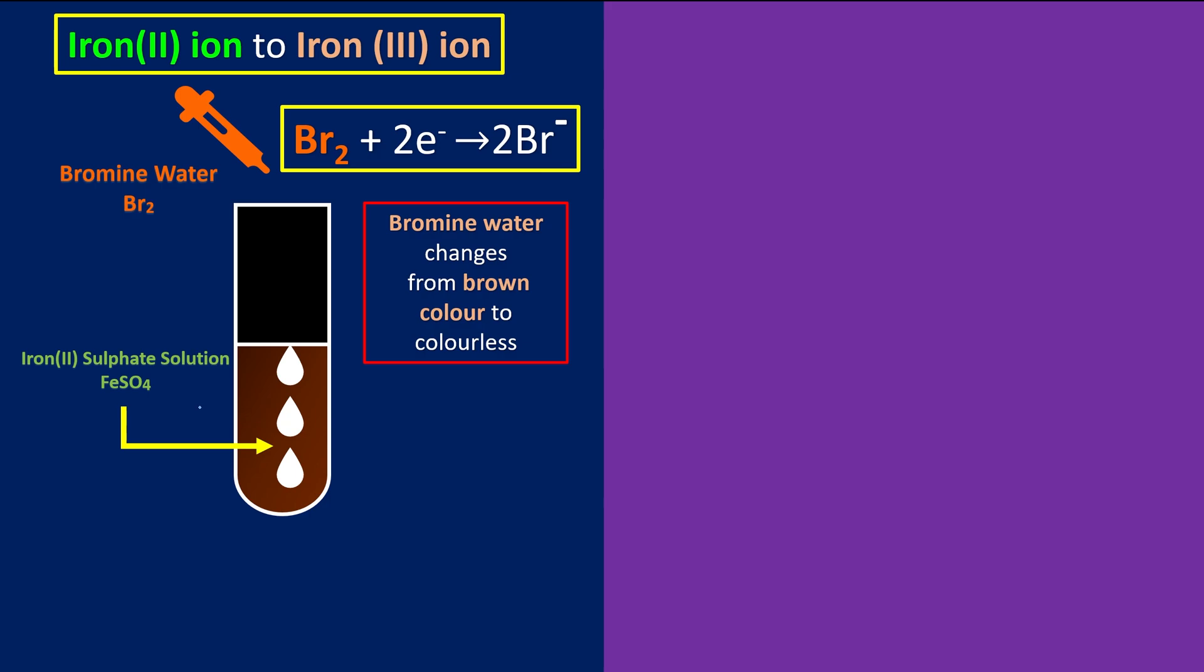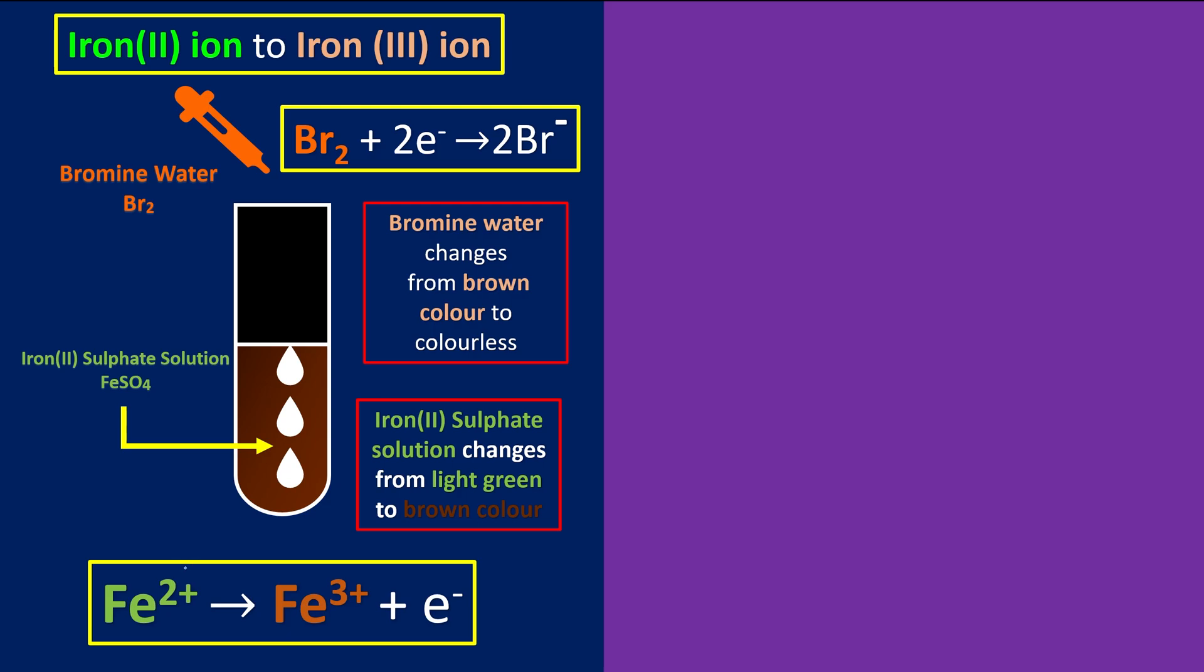Meanwhile, we also observe that the iron(II) sulfate solution, in the beginning light green in color, turns to brown color. Because we know iron(II) has been oxidized to become iron(III) ions. So how do you remember the color changes? Good boy, from green to brown.